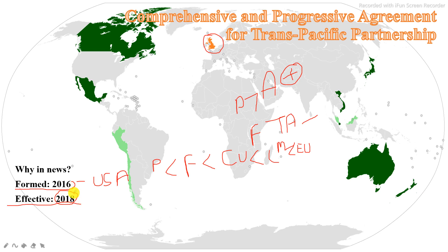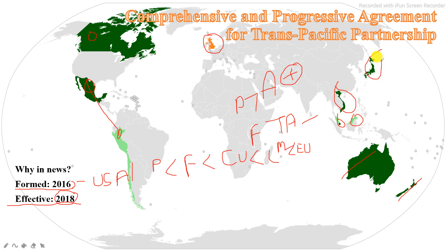Now we will talk about the membership. This trade agreement has been signed between 11 countries. Those 11 countries are: Canada, Mexico, Peru, Chile, New Zealand, Australia, Malaysia, Singapore, Brunei, Vietnam, and Japan. Basically, there are 11 countries that have signed this free trade agreement.